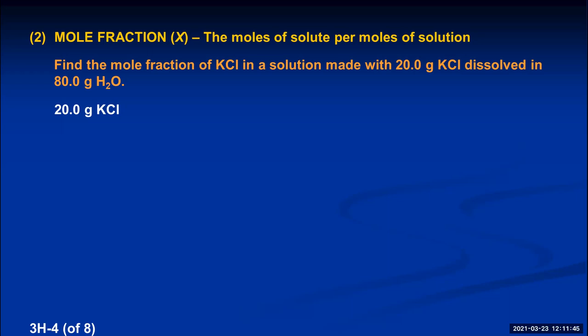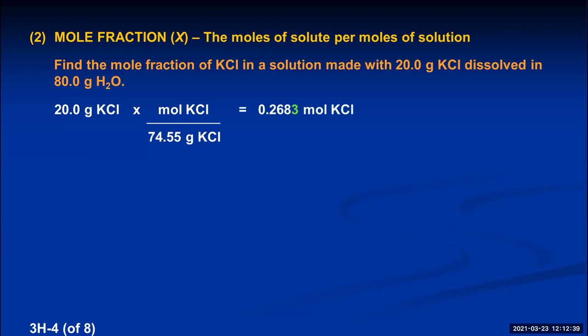To convert 20 grams of KCl into moles, we need the molar mass of KCl. One mole of KCl has one mole of potassium at 39.10 grams, and one mole of chlorine at 35.45 grams, which adds up to 74.55 grams per mole. Writing that as a conversion factor with 74.55 grams of KCl on the bottom and one mole of KCl on top, the grams cancel out, giving us 0.268 moles of KCl to three significant figures.